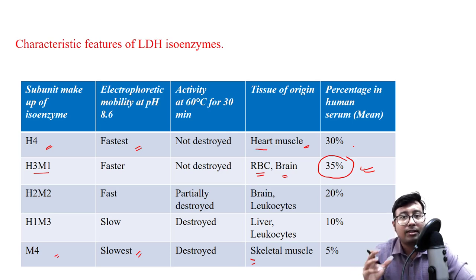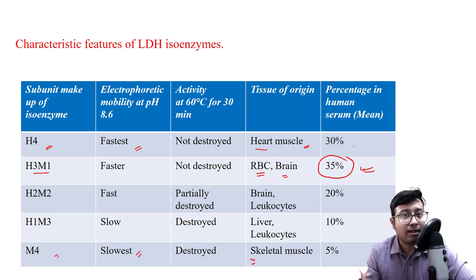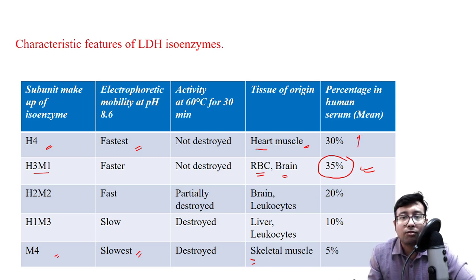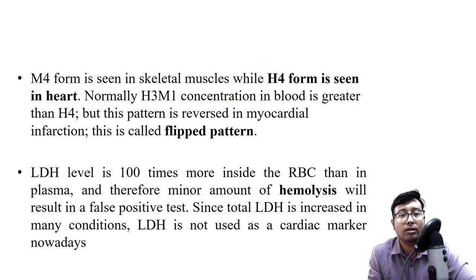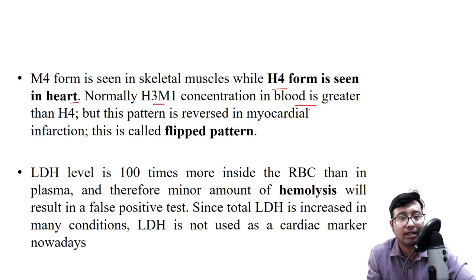Normally H3M1 is the most abundant fraction. However, if there is acute myocardial infarction — a heart attack — with destruction of cardiac tissue, the value of H4 will increase above H3M1. This is known as the flip pattern. Normally H3M1 is highest and H4 is second; in acute myocardial infarction, this pattern is reversed — H4 becomes the highest and H3M1 becomes second.